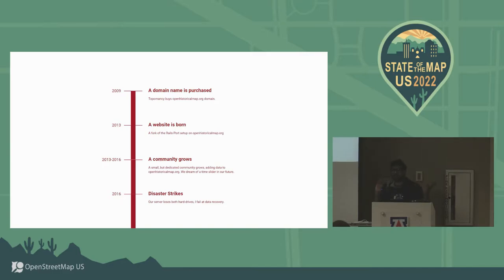There were some ideas that there should be some sort of open software to do historical mapping. We were all big fans and users of OpenStreetMap. We ended up building the software for NYPL and the Library of Congress, which worked for them — it was great — but it was a lot of complexity. It was rebuilding a lot of things.